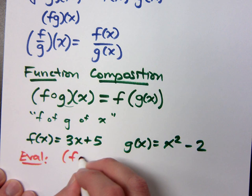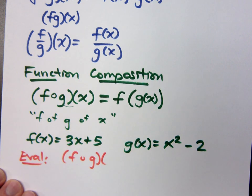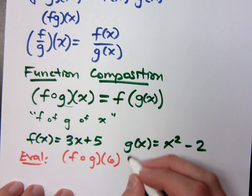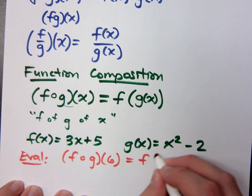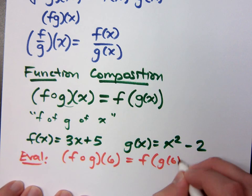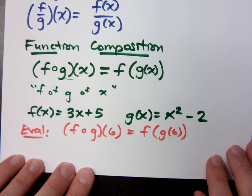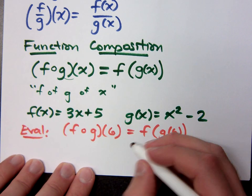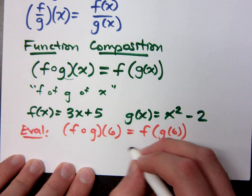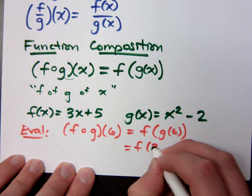Evaluate f of g of 6. What does that mean to do? Remember the turducken? Stuff it correctly. That means you do f of g of 6. What's g of 6? 34. Okay. So this means f of 34.